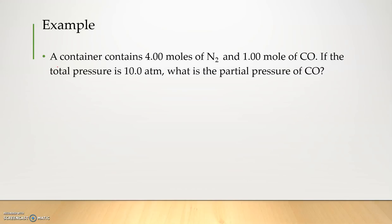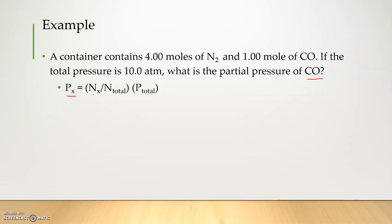Here's an example. We have a container that contains four moles of nitrogen gas and one mole of carbon monoxide. If the total pressure is 10 atm, what is the partial pressure of carbon monoxide? We use the equation we just learned. In this case, we're working with the partial pressure of carbon monoxide, so our X is carbon monoxide: the pressure of carbon monoxide equals the moles of carbon monoxide over the total moles times the total pressure.